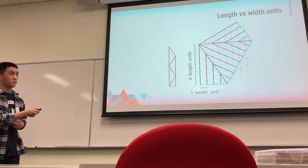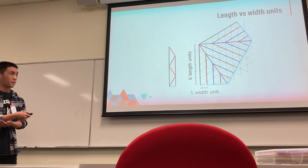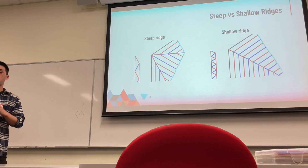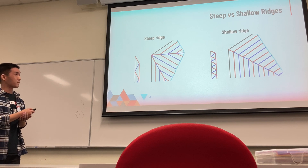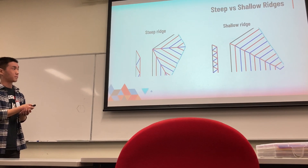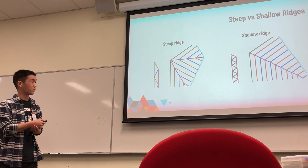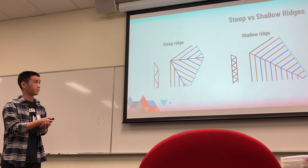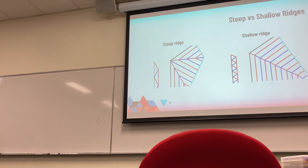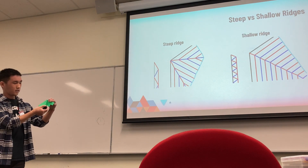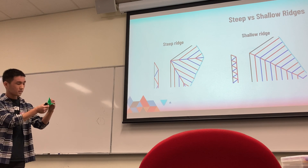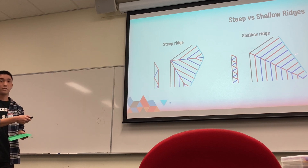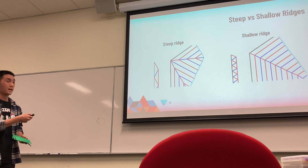We have length units corresponding to flap length and width units corresponding to flap width, differing by a factor of square root of three. In hex pleating, there are two types of ridges: steep ridges at 30 degrees from the axis and shallow ridges at 60 degrees from the axis. A shallow ridge takes up much less paper compared to steep ridges and is more efficient — essentially approximating a circle using a hexagon rather than a triangle, so the hexagon is more efficient.